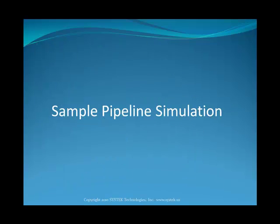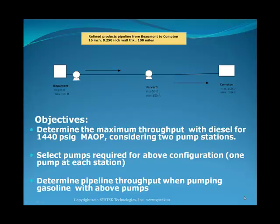We're going to look at a sample pipeline simulation. We have a refined products pipeline that goes from Beaumont to Compton — 16 inch, quarter inch wall, 100 miles long. Beaumont starts at Mile Post 0, elevation of 100 feet. Compton is at Mile Post 100, elevation of 350 feet. Harvard is an intermediate location at Mile Post 50, with an elevation of 150 feet.